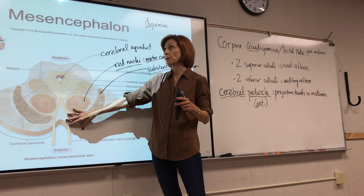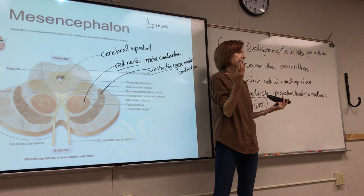That is the midbrain. Anything not discussed, you don't need to know. The structures we talked about are the ones to identify. This cross-section diagram will be on the test, so you should be able to identify the parts of the midbrain and know the shape of the cross-section.